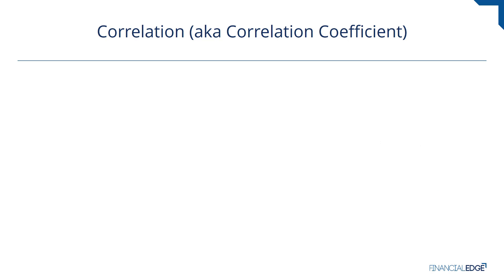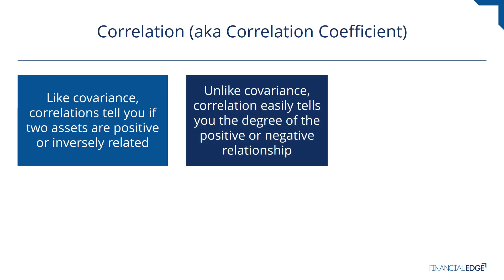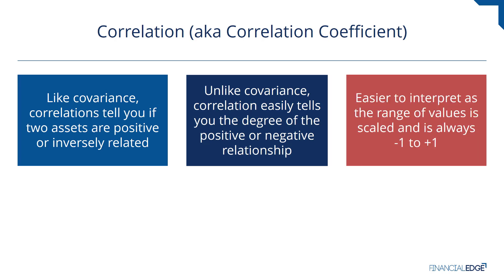Hence, the correlation statistic, also known as the correlation coefficient. It's very similar to covariance in that it allows us to get a sense of a positive or negative relationship between two assets. But unlike covariance, it's a lot easier to interpret, and we're able to get a better understanding of how strong the positive or negative relationship really is. It standardizes the values and places bounds of negative one and one on its possible values, allowing easier comparisons between different pairs of assets — which covariance does not allow. That's why you're more likely to see correlation data in finance and investments.